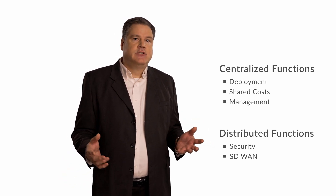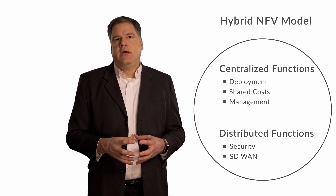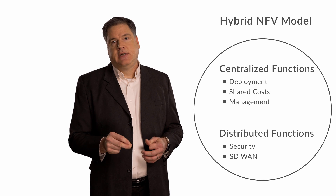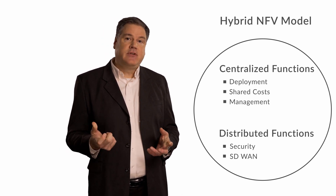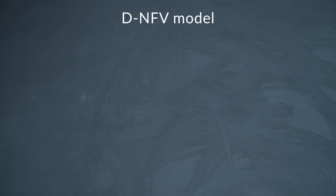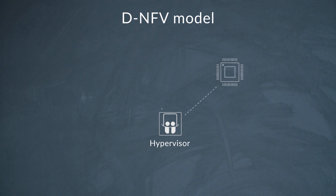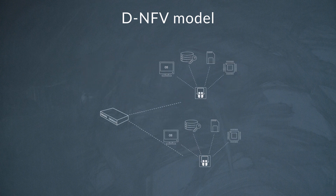In reality, you'll probably deploy a mix of centralized and distributed functions in what we call a hybrid NFV model. In addition to the virtual network functions, or VNFs, and the compute server itself, we will need several key components to successfully deploy the DNFV model. The server requires an operating system including a hypervisor function, whose job it is to allocate the processor, storage, and memory capacity of the server to the various VNFs.